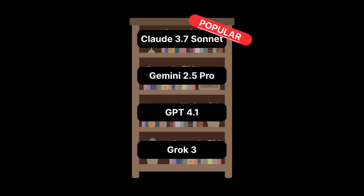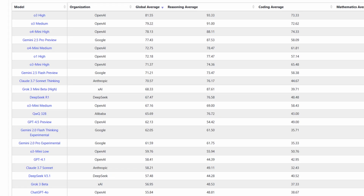For example, Claude 3.7 Sonnet is still one of the biggest sought-after models by coders, but many benchmarks fail to recognize it.